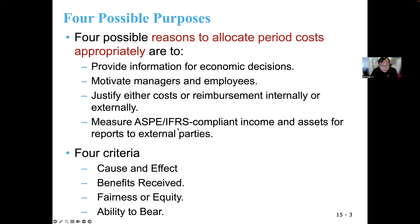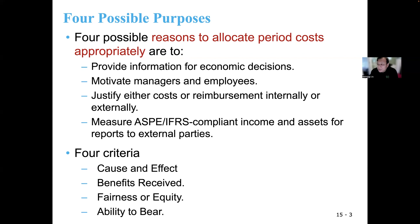The four criteria for period cost allocation: first, cause and effect — you incur the cost and you see a result. Does the cost on the supporting division benefit that productive division? If the answer is yes, then there is a cause and effect link. You also want to consider fairness or equity. When you allocate, you can't unfairly allocate a huge amount of cost to one division versus another — you have to be fair. Some divisions may not be able to bear the cost, so those are the things you have to consider.